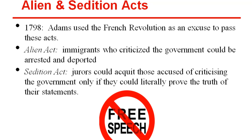Another well-known event during Adams' presidency were the Alien and Sedition Acts in 1798. Adams used the French Revolution as an excuse to pass these acts. People were concerned about revolution spreading to America. Adams passed the first Alien Act, designed to target immigrants who criticized the government, allowing for them to be arrested or deported.